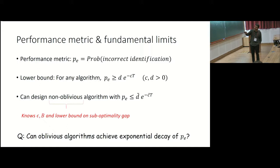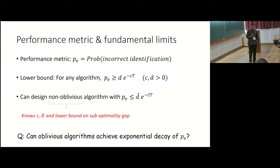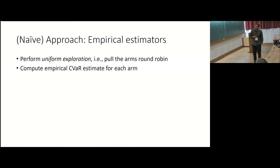At the end of the budget, I compute the empirical CVaR estimator for each arm and pick the one with the smallest estimate. It turns out the probability of error is upper bounded not by something exponential, but by a power law — a constant divided by T raised to ε. Moreover, this bound is tight: I can construct an instance where this naive approach gives exactly this power-law form of decay, much slower than exponential.